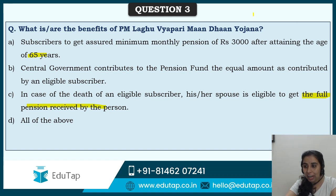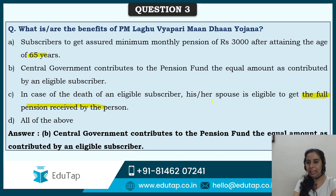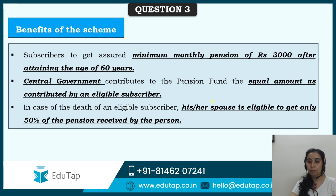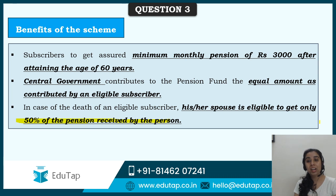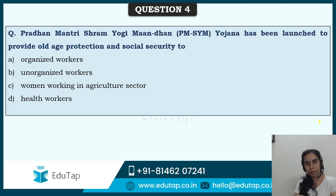Had the options said 60 years and 50 percent, all three would have been correct. But as stated, the only correct option is B. So to summarize: monthly pension of Rs. 3000 at age 60, central government contributes an equal amount, and in case of death, the spouse is eligible to get only 50 percent of the pension. I hope you will never forget this because we are discussing it. This is a very important social security scheme launched in 2018-19 and such schemes are very important as per the previous exam pattern.